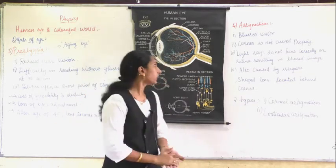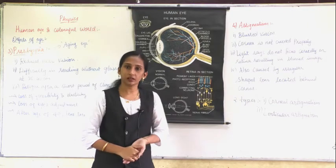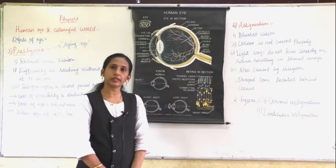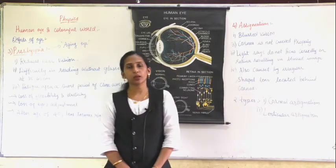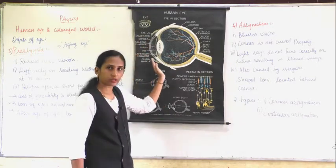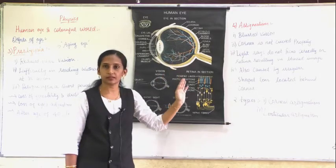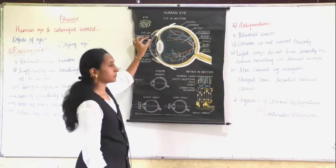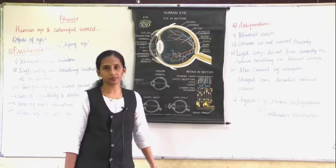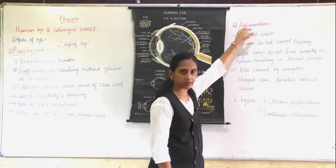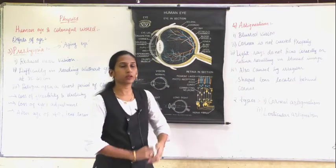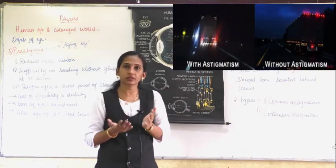The fourth defect of vision is astigmatism. Astigmatism is a defect related to the lens and the cornea — the cornea is the outer part of the eye, with the lens behind it. A person with astigmatism sees a blurred vision; they cannot see a clear image.